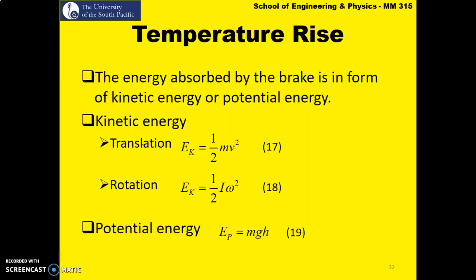And finally, we had already looked at the energy transformation. So when the brake is applied, kinetic energy is converted to heat energy. And kinetic energy can be in the form of translation as well as rotation. So for translation your kinetic energy is ½mv² whereas for rotation your kinetic energy is ½Iω². Where I is the moment of inertia and ω is your angular velocity. And also in terms of potential energy, the potential energy is simply mgh.